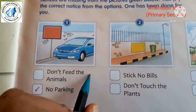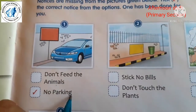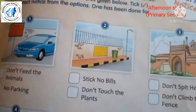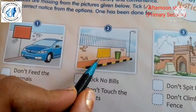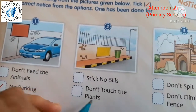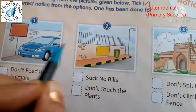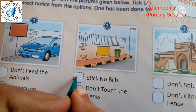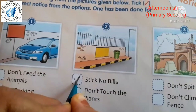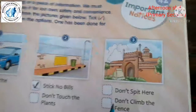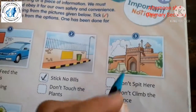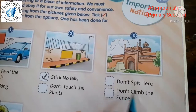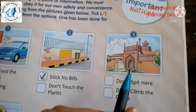For example, the first picture shows a car and a body, so the correct notice is 'no parking'. The second picture — the options are 'don't feed the animals' or 'stick no bills'. The correct notice is 'stick no bills', meaning don't stick anything here. The third is a building — the correct notice is 'don't spit here'. We should not spit at any place.